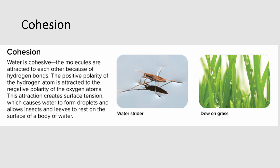Another property of water is cohesion. Water is cohesive, meaning the molecules are attracted to each other because of hydrogen bonds. The positive polarity of the hydrogen atom is attracted to the negative polarity of the oxygen atom. This attraction creates surface tension, which causes water to form droplets and allows insects like the water strider to walk on the surface. Because the water is sticking together, it creates a film able to bear a certain amount of weight, which water striders use as a predatorial bug.